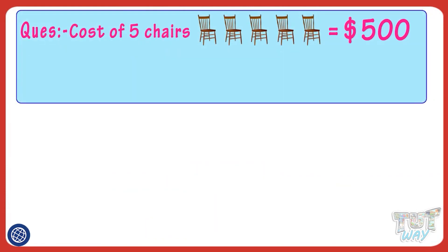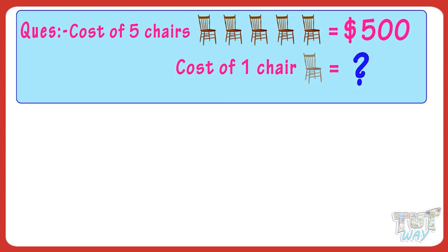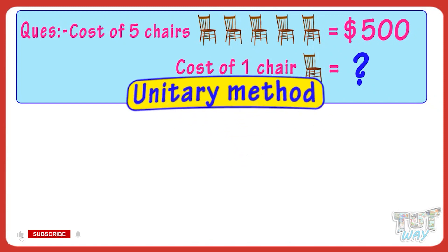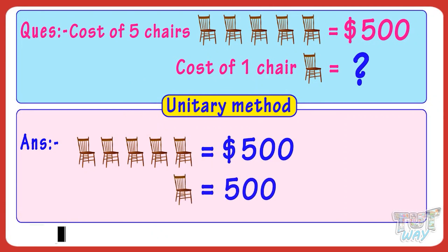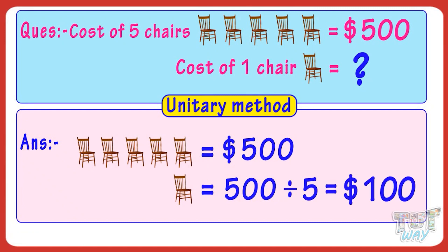The cost of five chairs is given — it is $500. Then what is the cost of one chair? We have to find it using the unitary method. If the cost of five chairs is $500, then the cost of one chair is $500 divided by five. So the cost of one chair is $100.